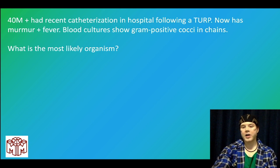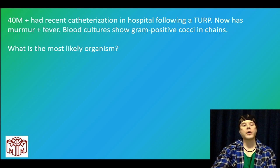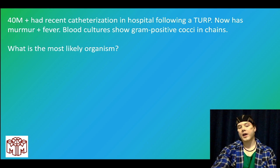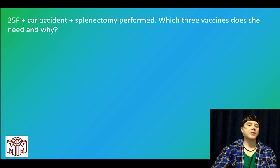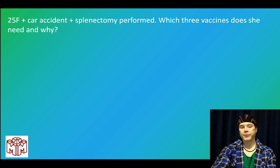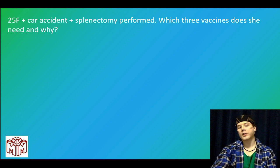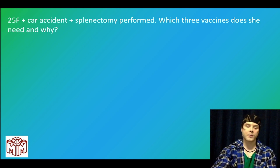An elderly male (should be ~80 years old) had a recent catheterization following TURP and now has gram-positive cocci in chains with endocarditis — most likely organism is enterococci. A 25-year-old female had a splenectomy after a car accident. Which three vaccines does she need? Strep pneumo, Neisseria meningitidis, and Haemophilus influenzae type B, because she now has susceptibility to encapsulated organisms cleared via opsonization phagocytosis by splenic macrophages using C3b and IgG.